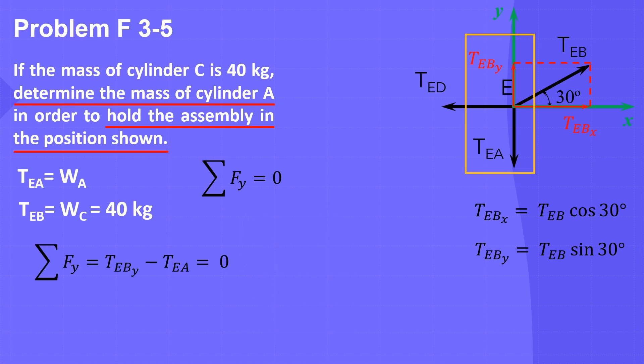So, TEBy - TEA = 0. Replace TEBy by TEB sin 30°. Then substitute the value of TEB, which is 40 kilograms force. Consequently, TEA = 40 sin 30° = 20 kilograms force.